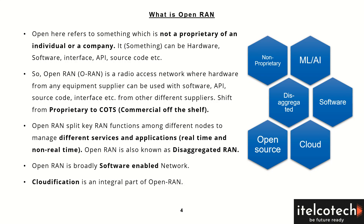In conventional RAN, all the different nodes and components of the RAN are being procured by a single supplier. In Open RAN, this will be shifted to an ecosystem where hardware can be procured from one supplier, software can be procured from a second supplier, and so on — there is no dependency on a single supplier.